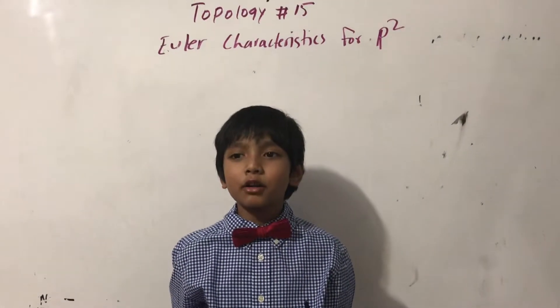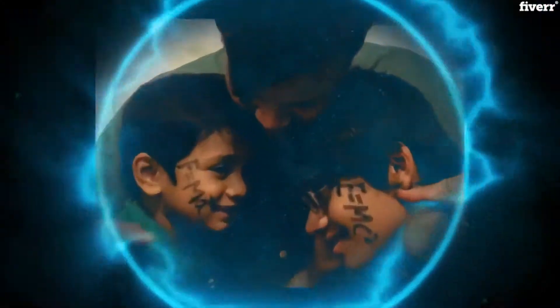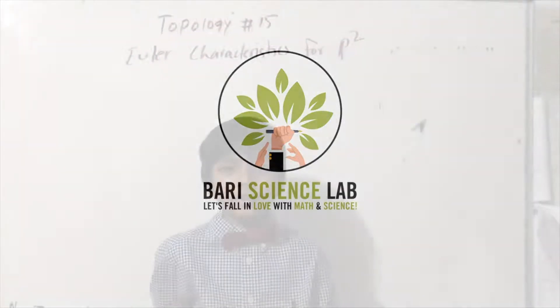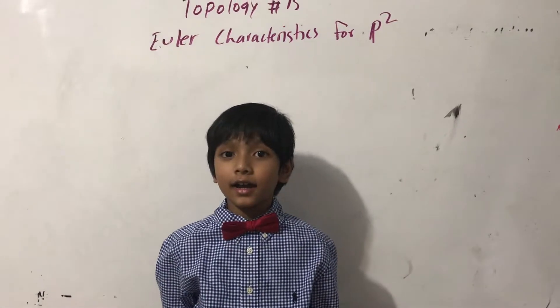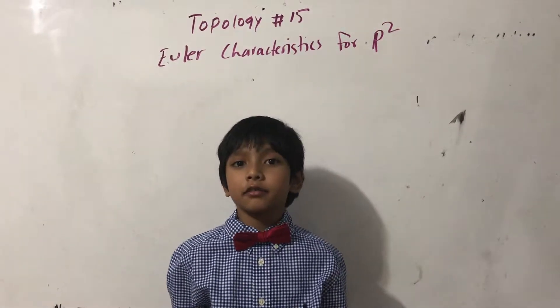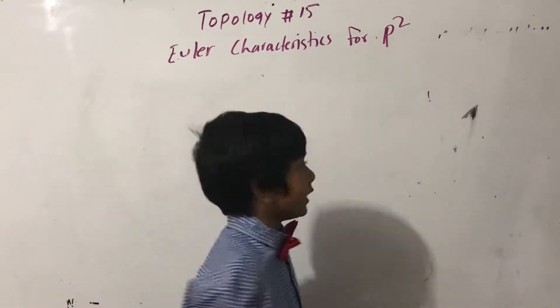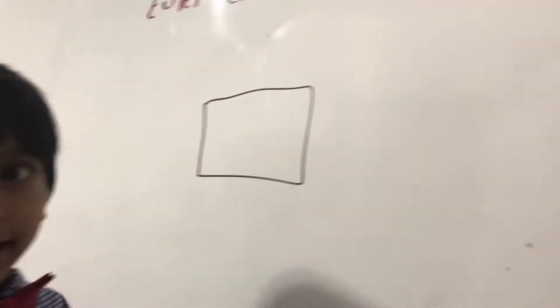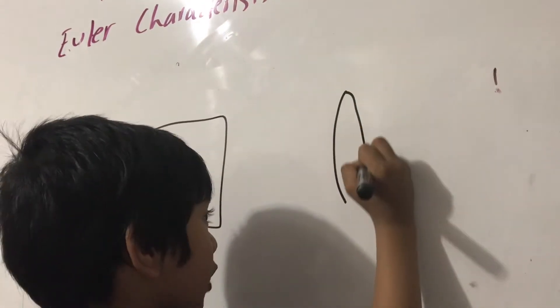Hello, my name is Aborno Isaac Berry. I'm from Berry Science Lab. Today is Topology Lecture number 15, and it is the Euler Characteristics of a Projective Plane. We're not only going to do the Projective Plane itself, but we are also going to do the 2-gon version.